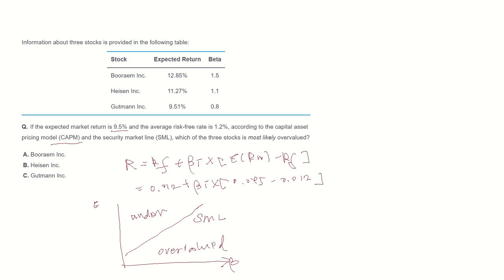So let's calculate each stock's SML as required stock return. For Bram, required stock return becomes 0.012 plus beta is 1.5.